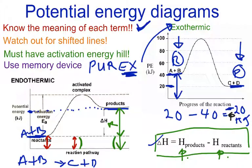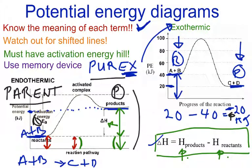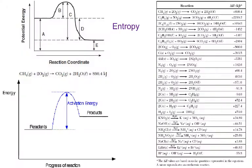In this diagram over here, we notice our products are above our reactants, and there's a memory device for that. If you say products above reactants, that reaction will be endothermic. So we have Purex for exothermic and Parent for endothermic.